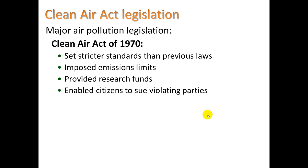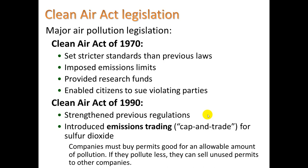Let's focus on that legislation. Two major ones: the Clean Air Act of 1970, which set stricter standards than previous laws, imposed emissions limits on how much a factory can emit in a day or in a year, provided research funds to improve smokestack emissions technology, and enabled citizens to sue violating parties. Then in 1990, there was the Clean Air Act — part two — which strengthened previous regulations and introduced emissions trading, which we call cap and trade, for sulfur dioxide.